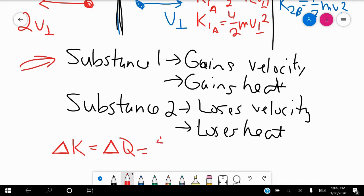and then so if we do the after minus the before, you find that we get 3 halves mV perpendicular squared, and that right there is your answer.